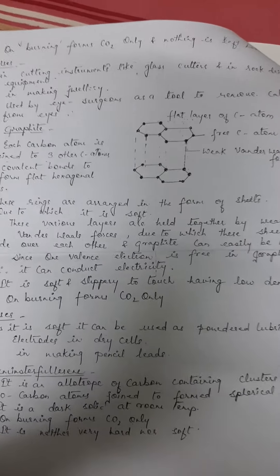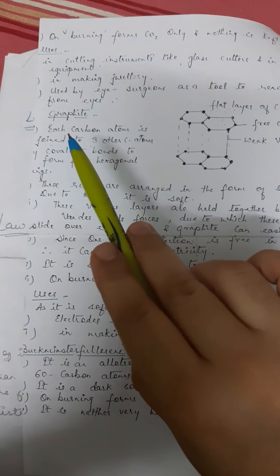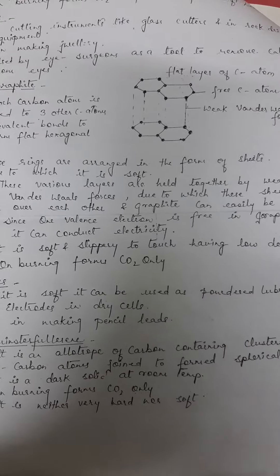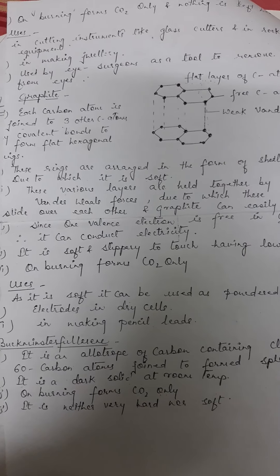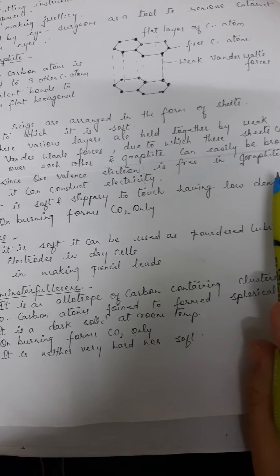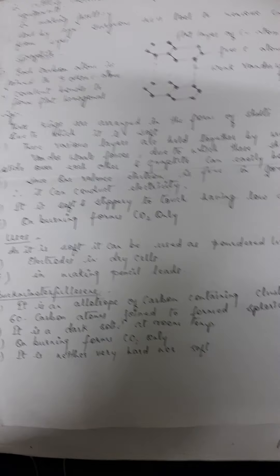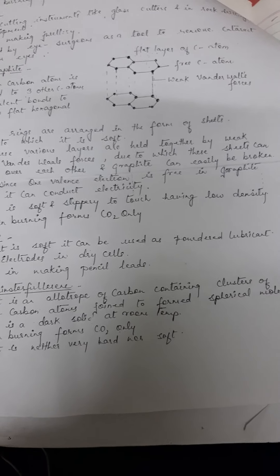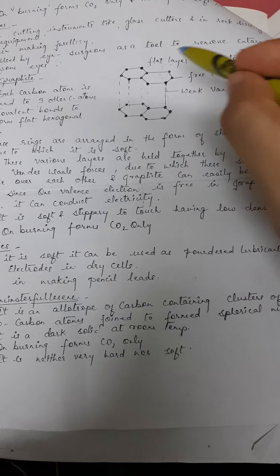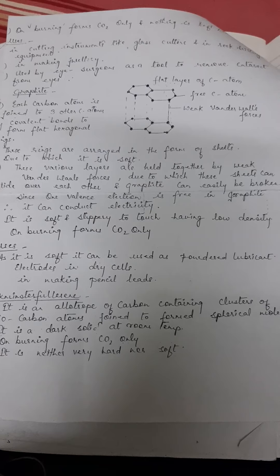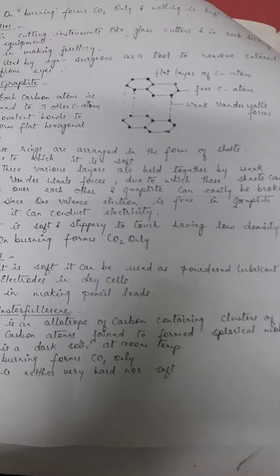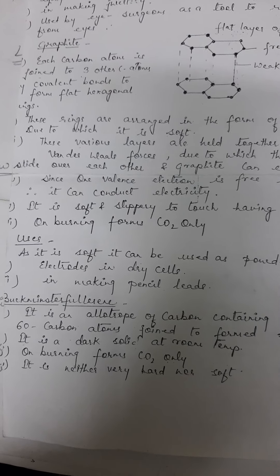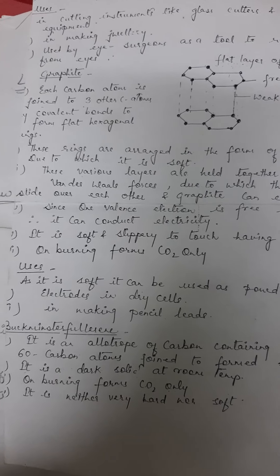Now we'll talk about graphite. Graphite structure is like flat layers where each carbon is joined with 3 carbons, so one is left. Because one valence electron is free in graphite, therefore it can conduct electricity. So now what is the basic difference between diamond and graphite? Diamond is a non-conductor of electricity whereas graphite is a conductor of electricity. And these layers - this is the structure of graphite - they are held together by weak van der Waals forces, due to which these sheets can slide over one another and graphite can easily be broken. Graphite is present in pencil lead. It can easily be broken, whereas diamond is the hardest substance.